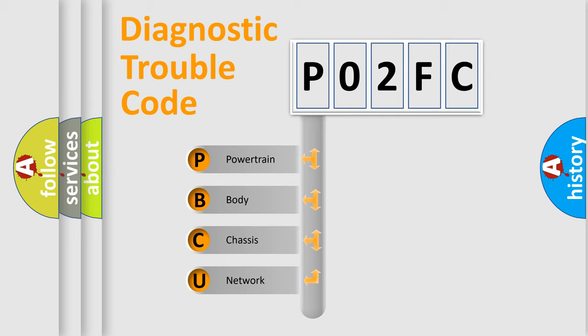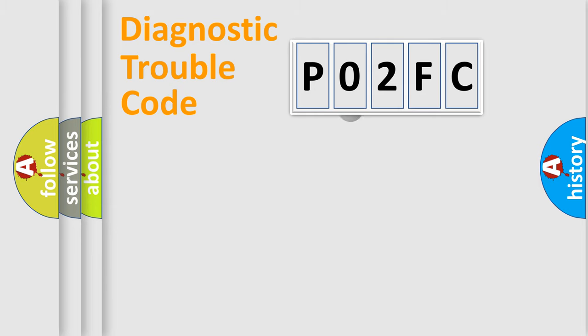We divide the electric system of automobile into four basic units: Powertrain, Body, Chassis, and Network. This distribution is defined in the first character code.